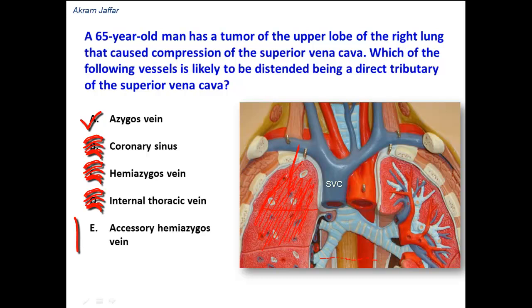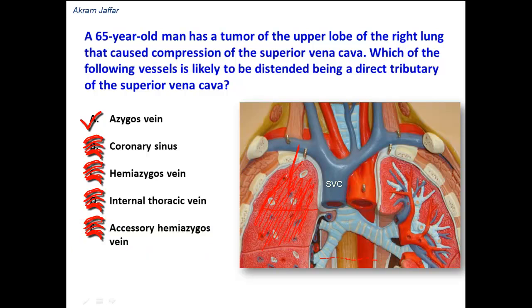Accessory hemi-azygous vein — the accessory hemi-azygous and the hemi-azygous veins drain into the azygous, but they are not direct tributaries of the superior vena cava.